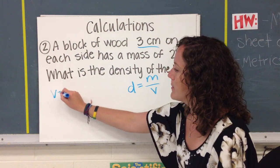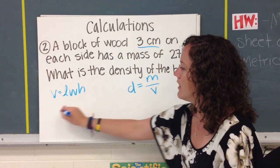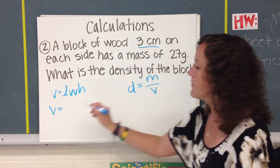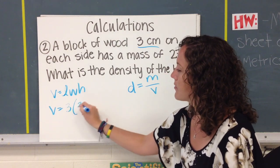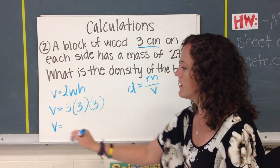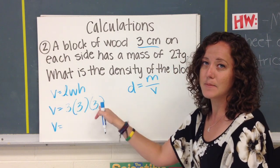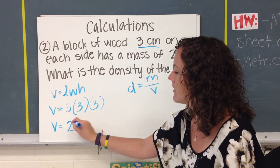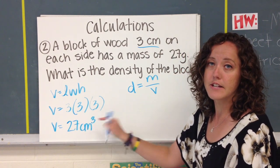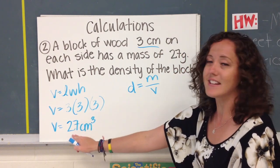So over here we can write our volume equation and plug our numbers in. We know that the length, width, and height are all three. So we multiply 3 times itself three times. So 3 times 3 is 9, and times 3 again is 27. And we're working in centimeters, and there are three dimensions. That's why it's cubed. Now we can take this information, plug it in over here to find the density of this cube.